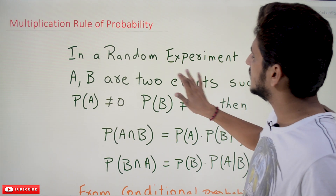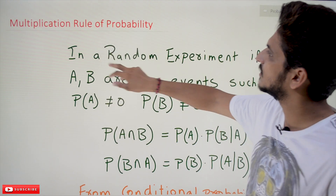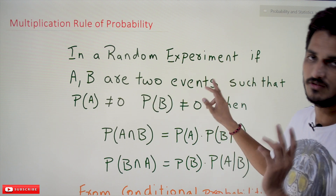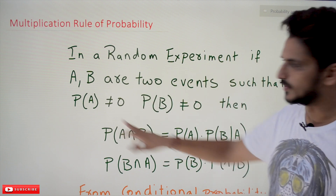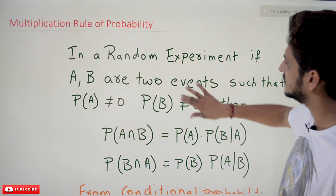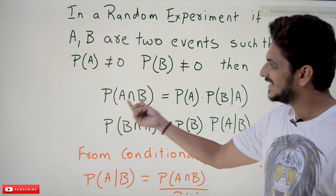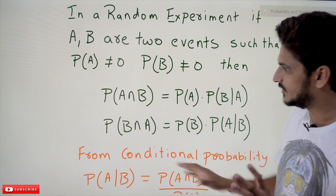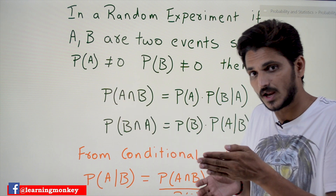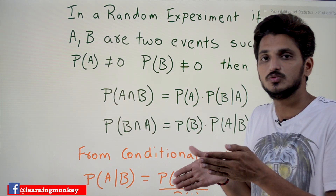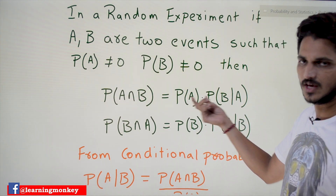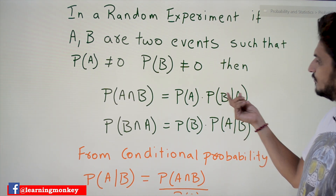Coming to today's class, let's first understand the definition of the multiplication rule. In a random experiment, if A and B are two events such that P(A) ≠ 0 and P(B) ≠ 0, then the probability of A intersection B — meaning event A has to occur and event B has to occur — is given as P(A) multiplied by P(B|A).